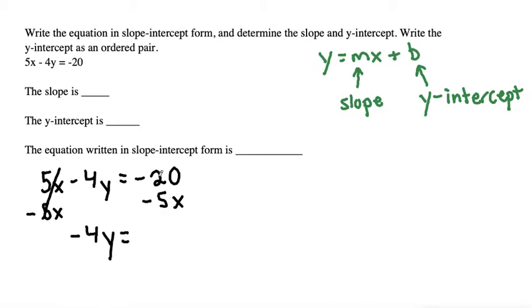This leaves us with negative 4y equals—and we could put either term first, but because the slope-intercept form has the x term coming first, let's write it first—negative 5x minus 20.